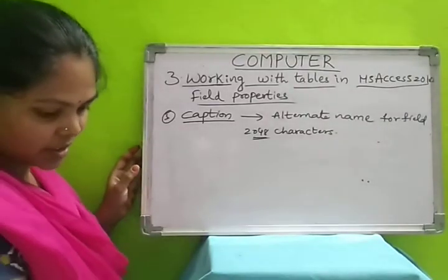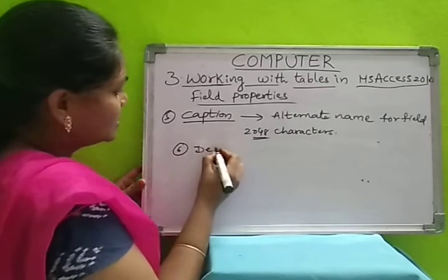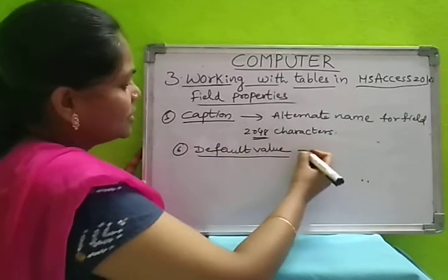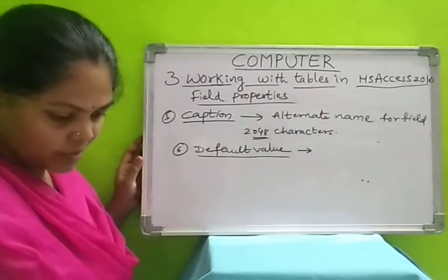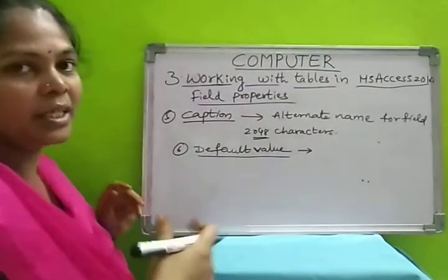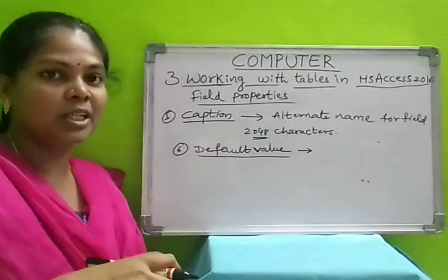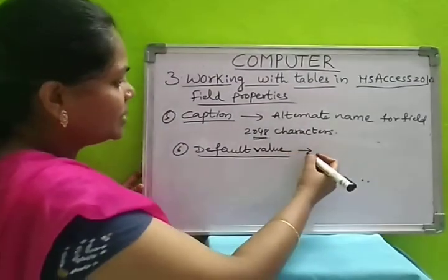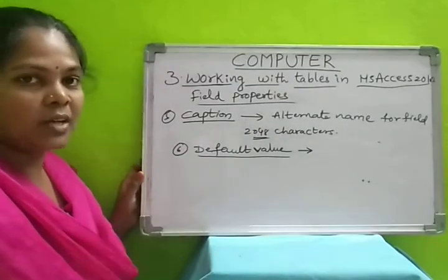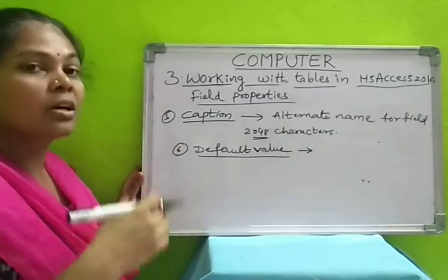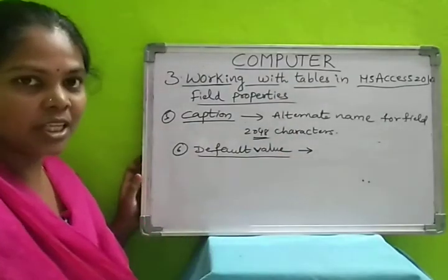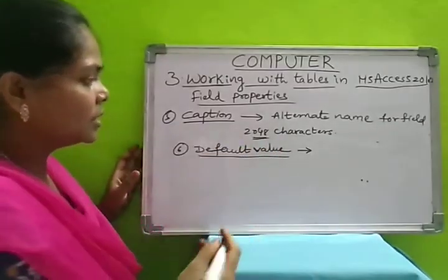Next is default value. This default value automatically increments when you add a new record to the table and decrements when you delete a record. The default value will be given for the record. Suppose roll numbers may start from 1 to 10, or some from 101, 102, or pin numbers — so the default value is given and you can change that value for the column.